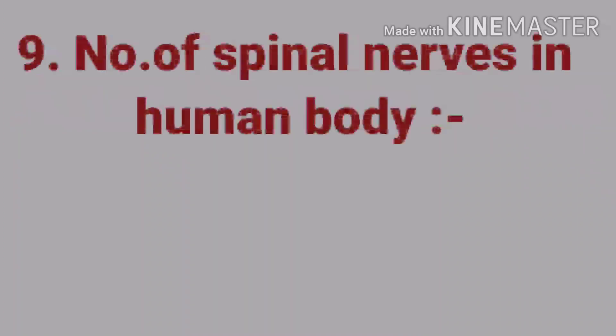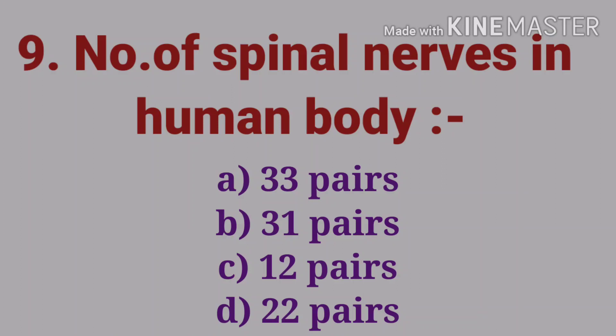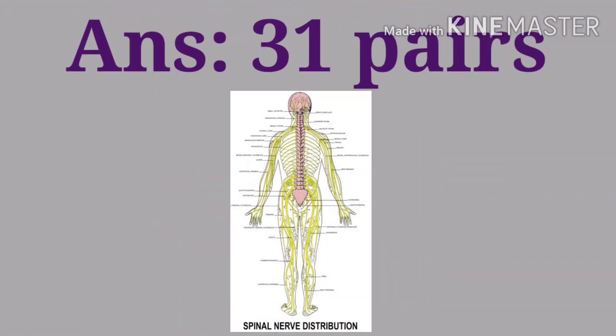The ninth question: number of spinal nerves in the human body — options are 33 pairs, 31 pairs, 12 pairs, and 22 pairs. The answer is 31 pairs: cervical 8, thoracic 12, lumbar 5, sacral 5, and coccygeal 1.